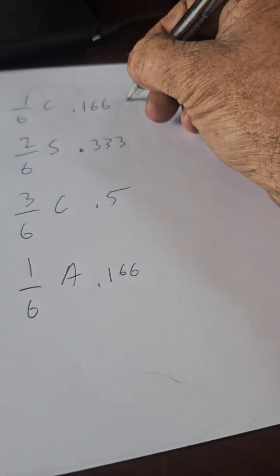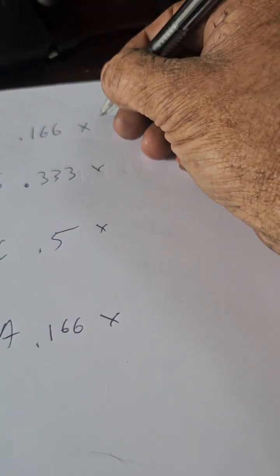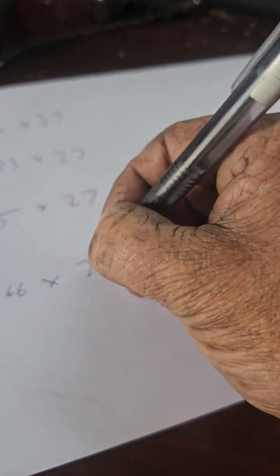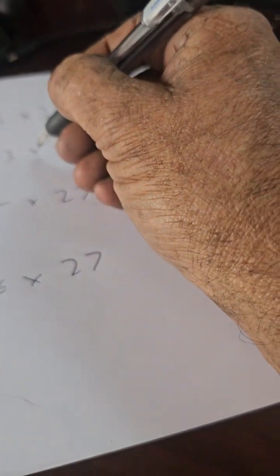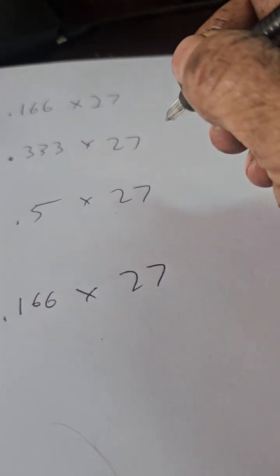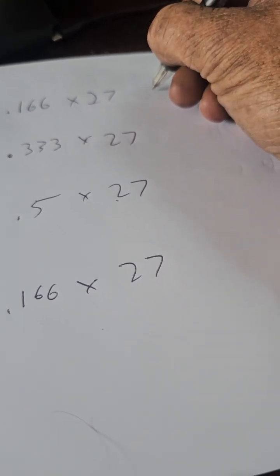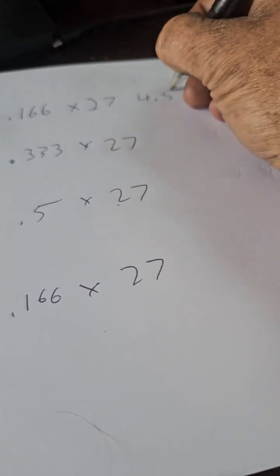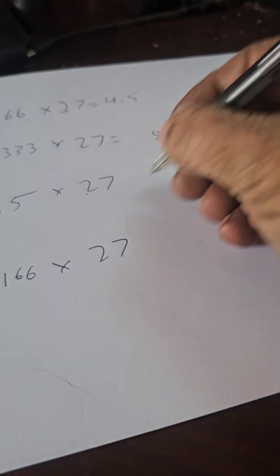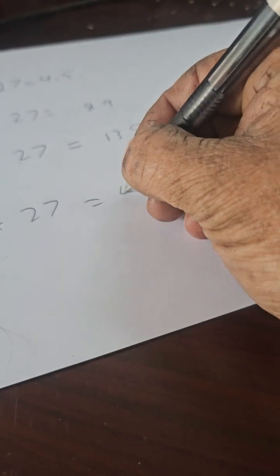Now we're going to times that by our cubic feet, which is 27 cubic feet. We're going to multiply these numbers and round up to the nearest tenth. That gives us 4.5, 8.9, 13.5, and 4.5.